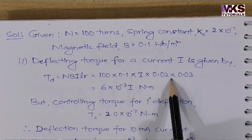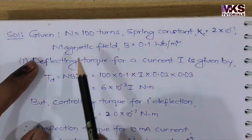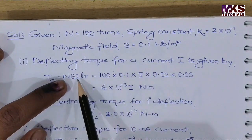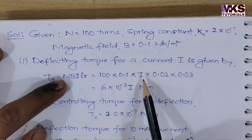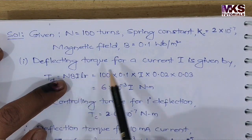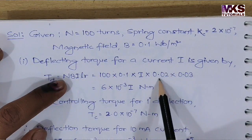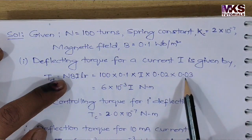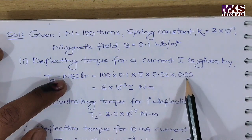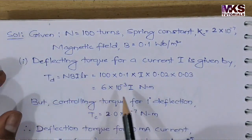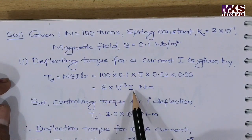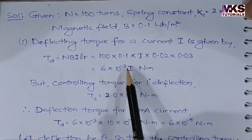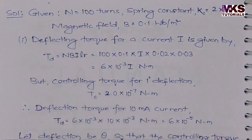The dimensions are given in centimeters, so convert to meters. N = 100, B = 0.1, I is unknown for now. L = 2 cm = 0.02 m, and R = 3 cm = 0.03 m. Solving in terms of I: TD = 6 × 10⁻³ × I Newton meter.